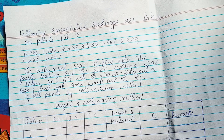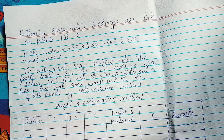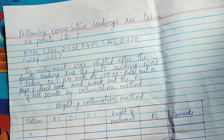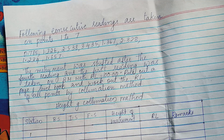The following consecutive readings are taken on points 1 to 7. We have points: 0.785, 1.326, 2.538, 3.435, 1.367, 2.328, 1.234, and 1.657.